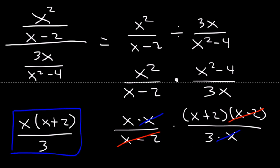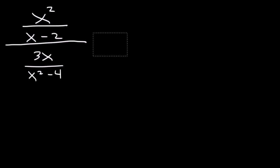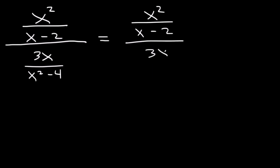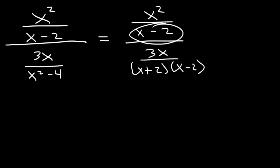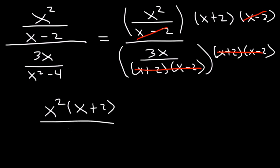Now let's do this the other way. Another way is to first factor everything. x squared minus 4 is x plus 2 times x minus 2. Then multiply the top and the bottom by the common denominator, which is x plus 2 times x minus 2. These pairs will cancel. On top we have x squared times x plus 2. On the bottom we just have 3x. After that we can cancel an x, giving us the same answer: x times x plus 2 over 3.